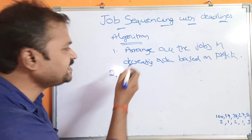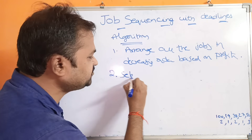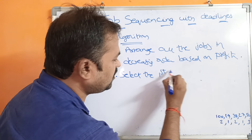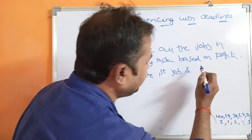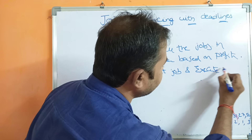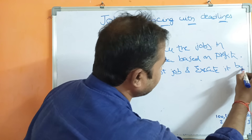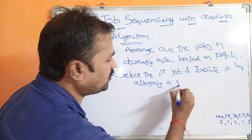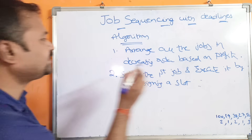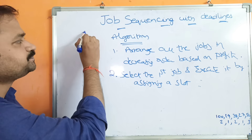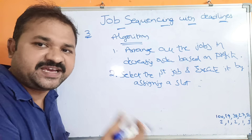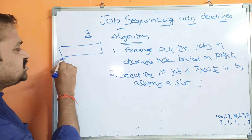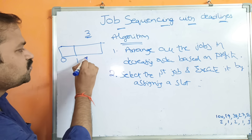The second step is to select the first job based on the sorted order and execute it by assigning a slot. For example, if the deadline is 3, we can have three slots: 0 to 1, 1 to 2, and 2 to 3. If a job's deadline is R, we first try to assign slot (R−1) to R.